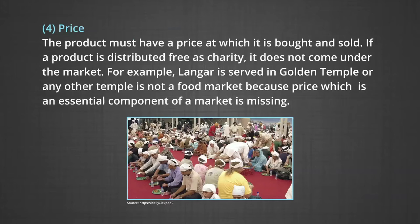Number four, price. The product must have a price at which it is bought and sold. If a product is distributed free at charity, it does not come under the market. For example, Langar food in the Golden Temple or any other temple is not a food market because price, which is an essential component of a market, is missing.